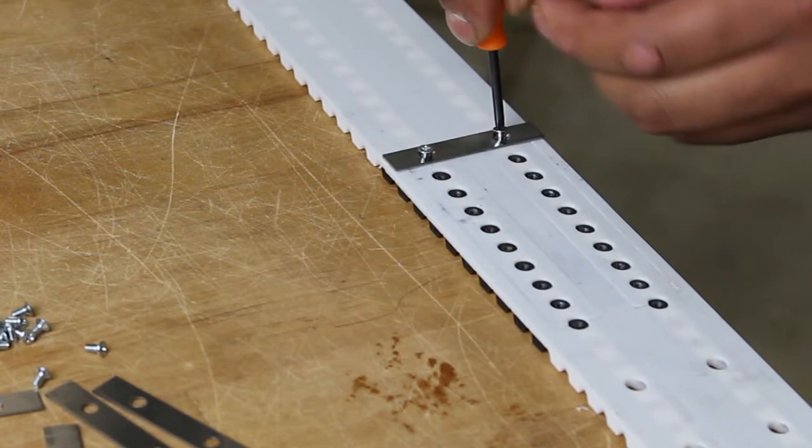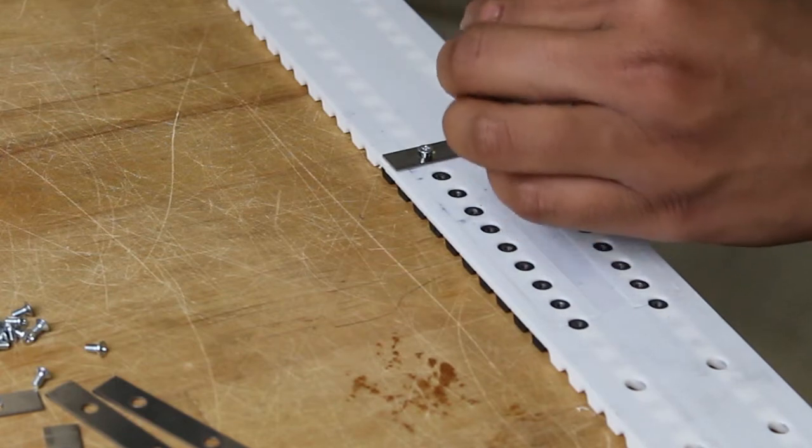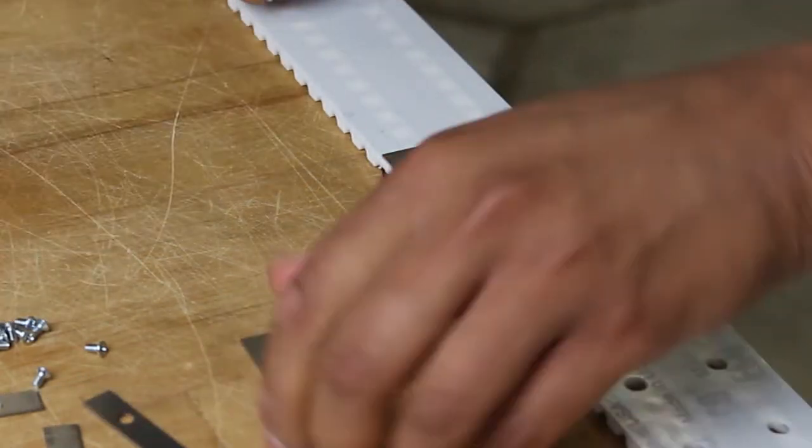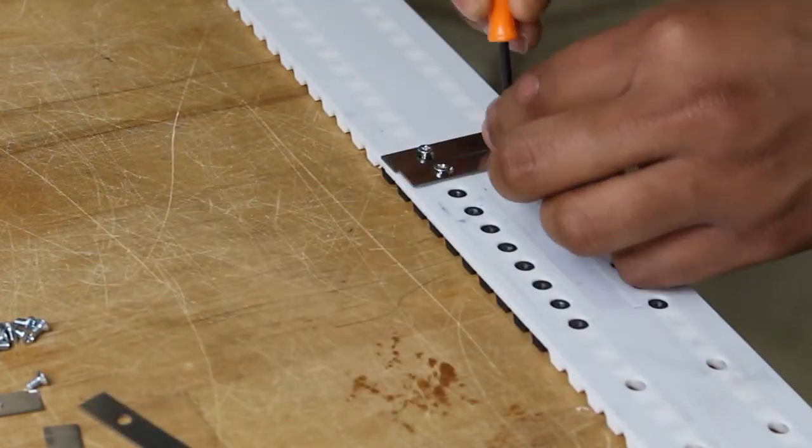In this example, we are partially driving the screws into the belt using a small hand screwdriver, and then we will finish the installation process using an electric screwdriver.